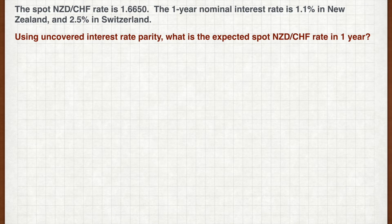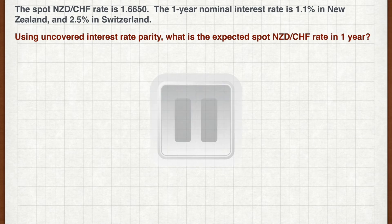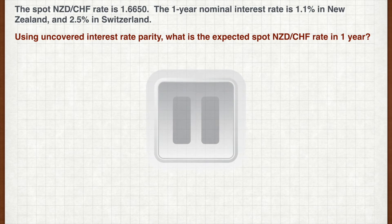Let's pause for another exercise. The spot NZD per CHF rate is 1.6650. The one-year nominal interest rate is 1.1% in New Zealand and 2.5% in Switzerland. Using uncovered interest rate parity, what is the expected spot NZD per CHF rate in one year? Pause the video now and work out your answer.